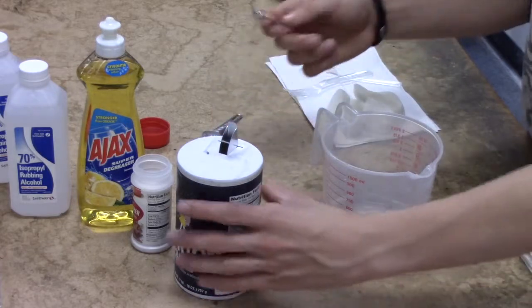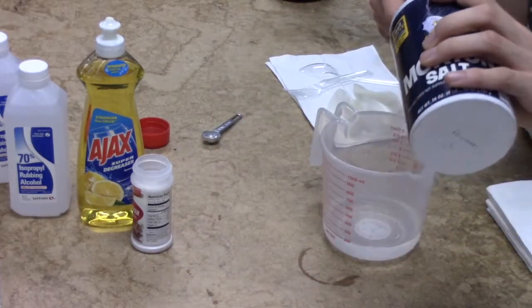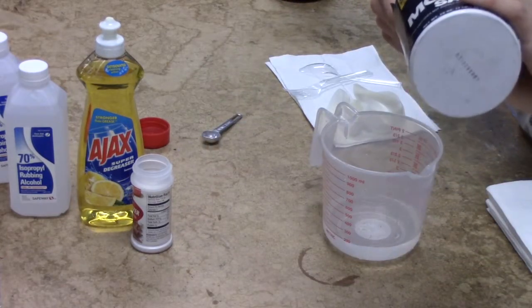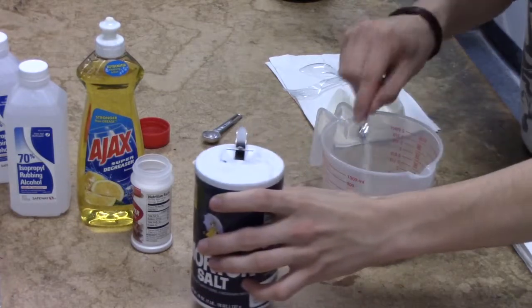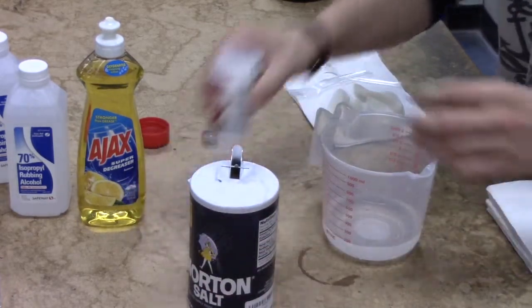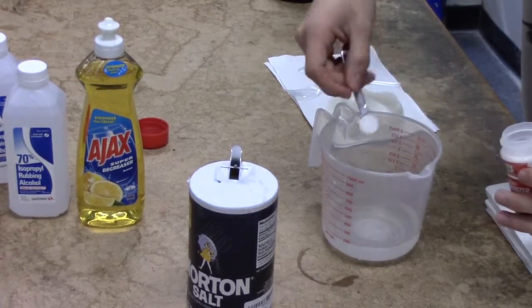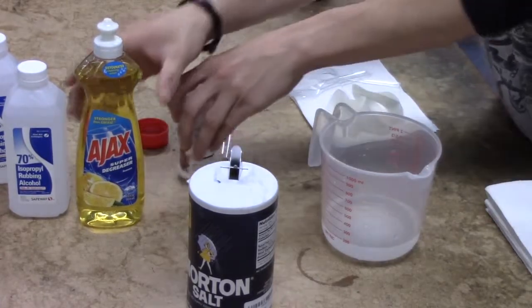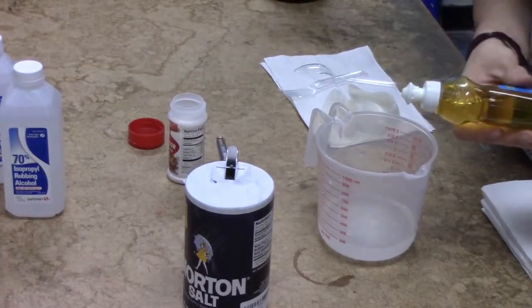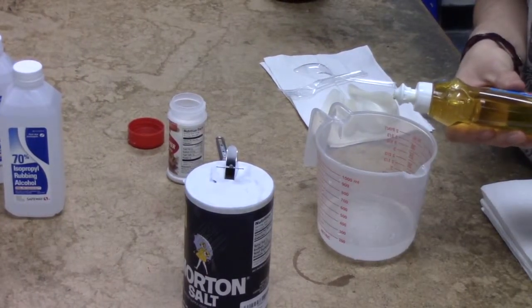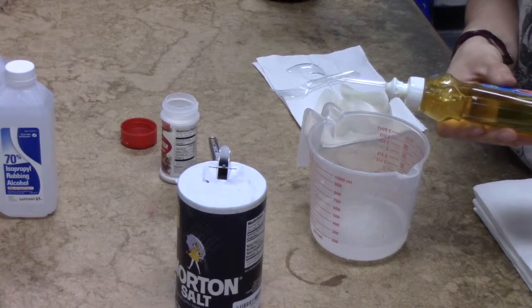The first thing we're going to do is mix in the ¼ teaspoon of salt, the ½ teaspoon of meat tenderizer, and the 3 drops of liquid dish detergent. 1, 2, 3, perfect.